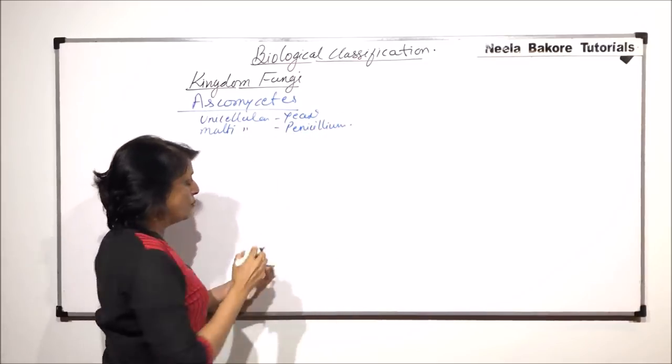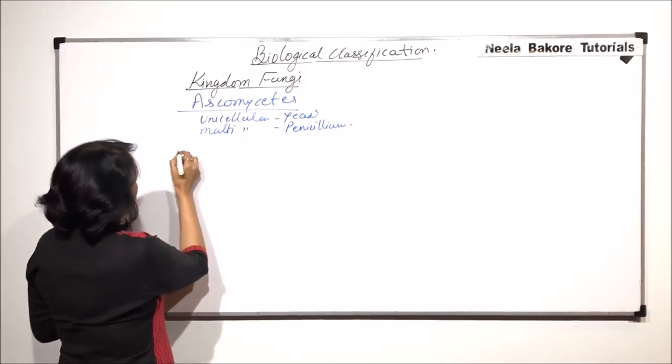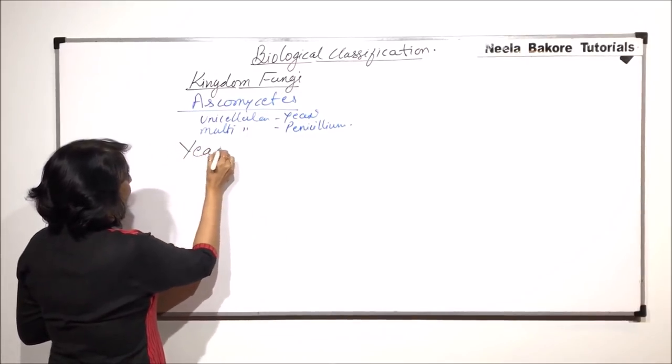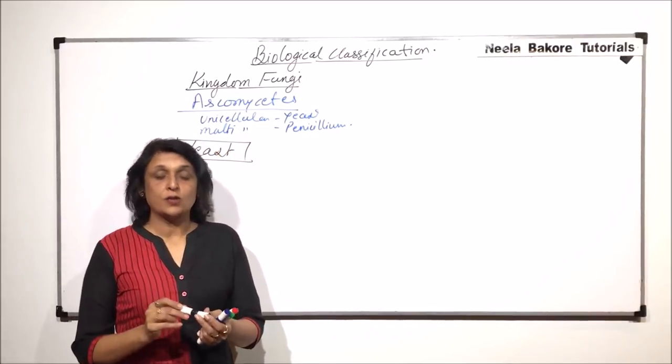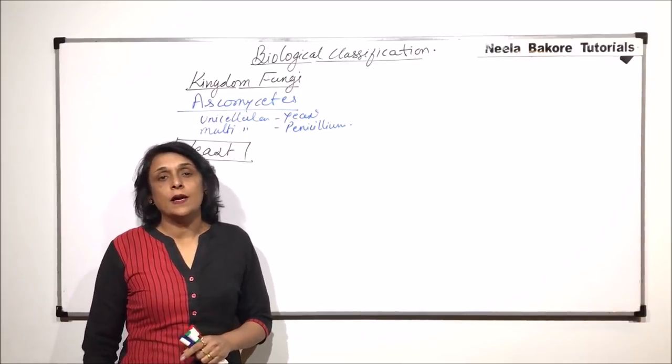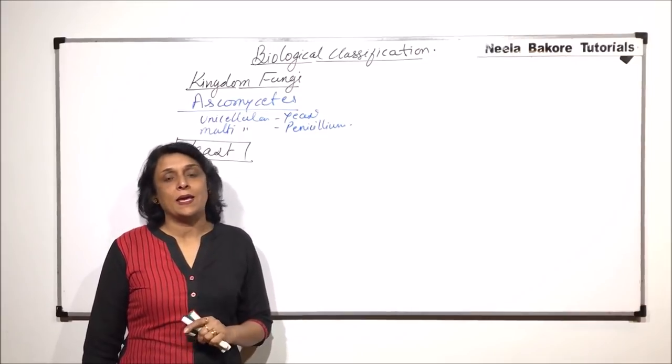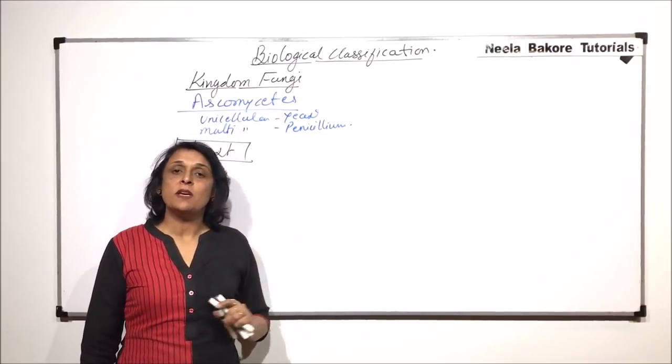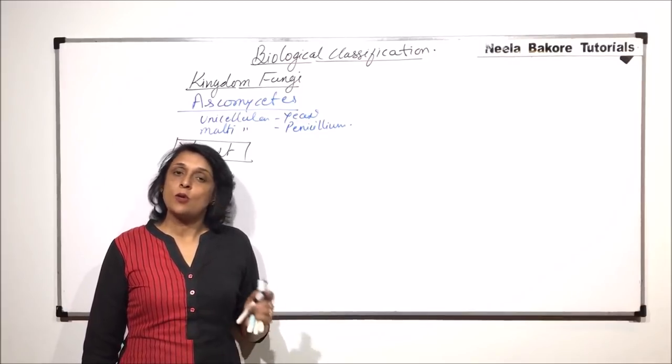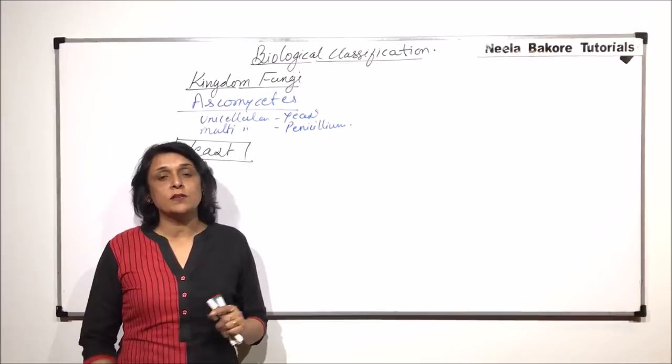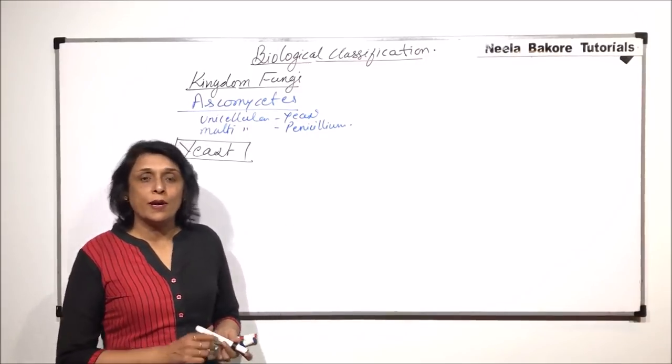We will talk about both these fungi, their life cycles in detail. So, let us first start with yeast. Now, when we use the word yeast, we are actually talking about a unicellular fungus which is used for fermentation as well as for baking. And there is one species, Saccharomyces cerevisiae, which is commonly known as baker's yeast or brewer's yeast because it is the same yeast which is used in baking industry as well as in brewing industry.